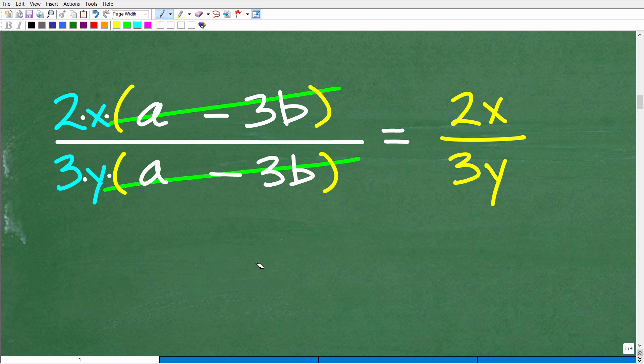But here, again, we're dealing with all factors. It's all one big product. So we can simply just cross-cancel these things. And what's left, we've got this lovely 2x over 3y, which of course is our answer.